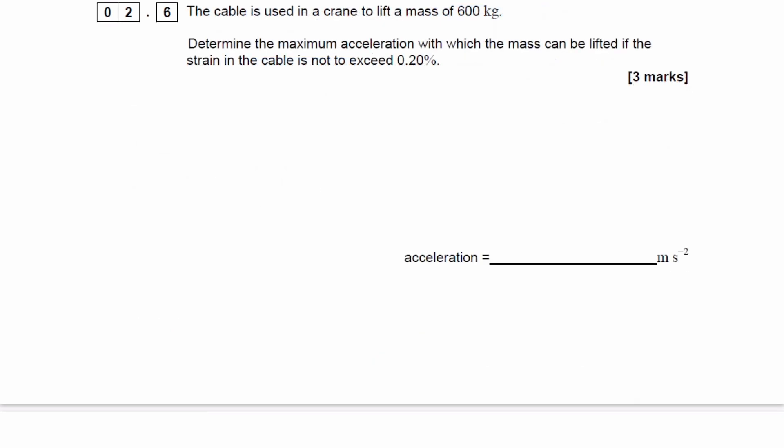The cable is used in a crane to lift a mass of 600 kilograms. Determine the maximum acceleration with which the mass can be lifted if the strain in the cable is not to exceed 0.2%. So F is equal to MA. We're trying to work out acceleration. Let's consider a force diagram. We have the tension going upwards, and then we have the weight going downwards of 600G. The acceleration will be upwards as the mass is being lifted. So then the equation would be T minus 600G. That would be our resultant force F, the resultant upwards force. That's equal to MA, 600 times A.